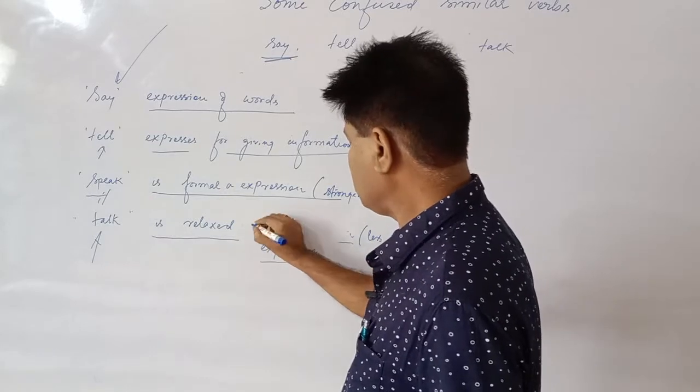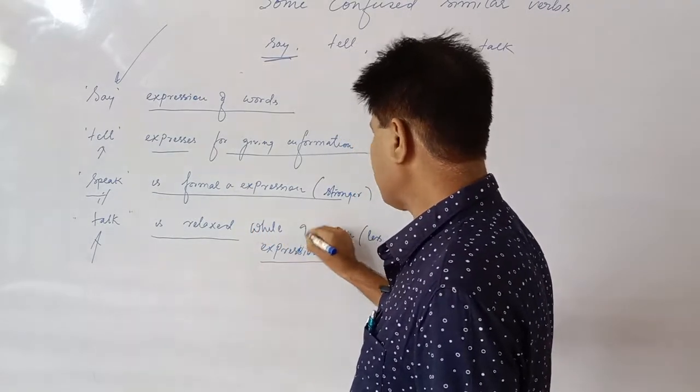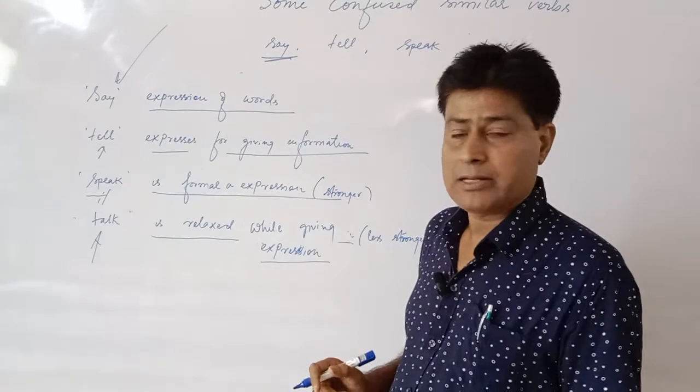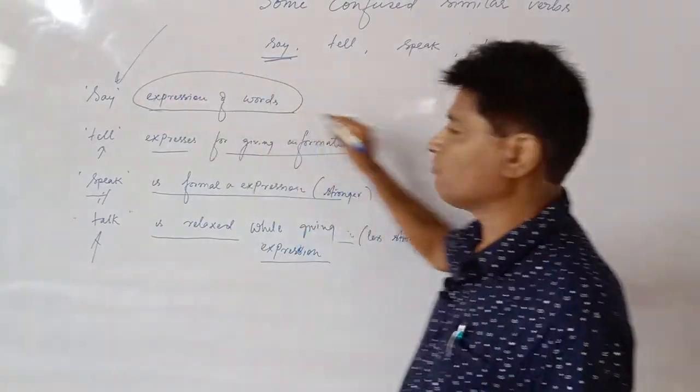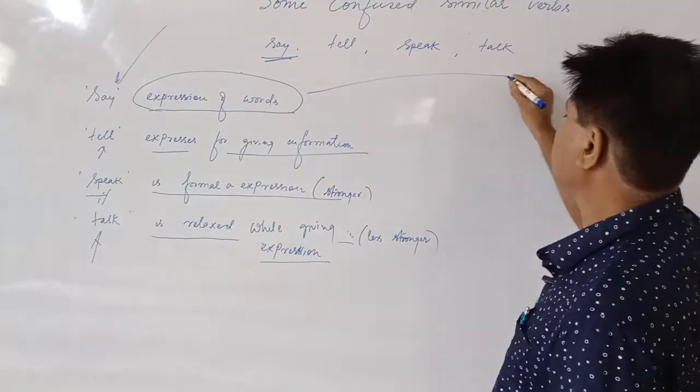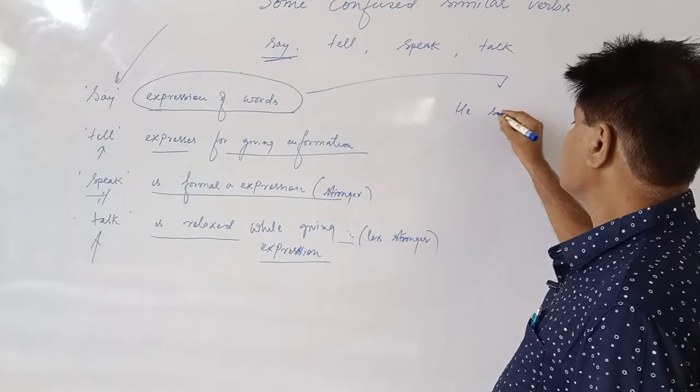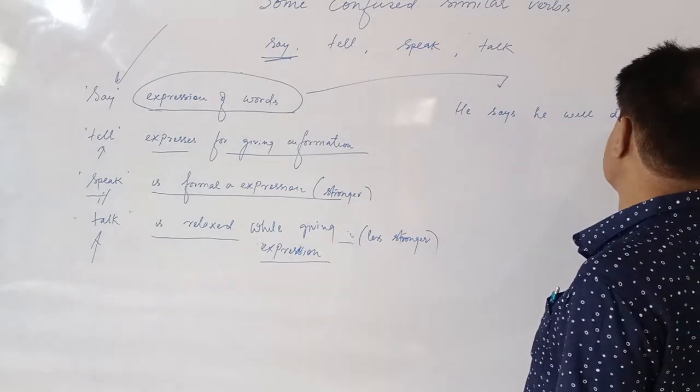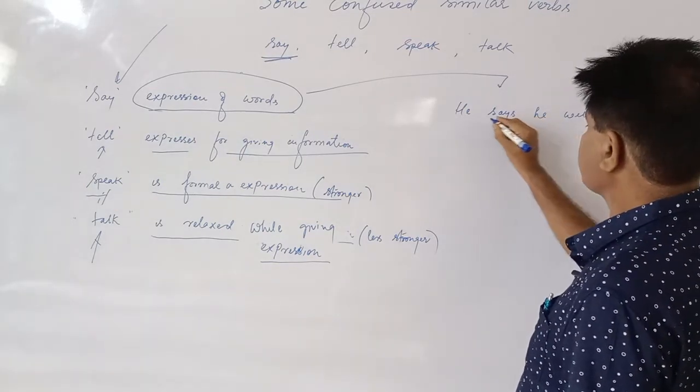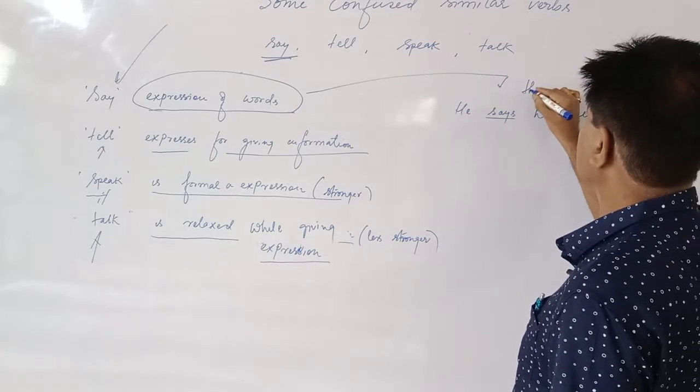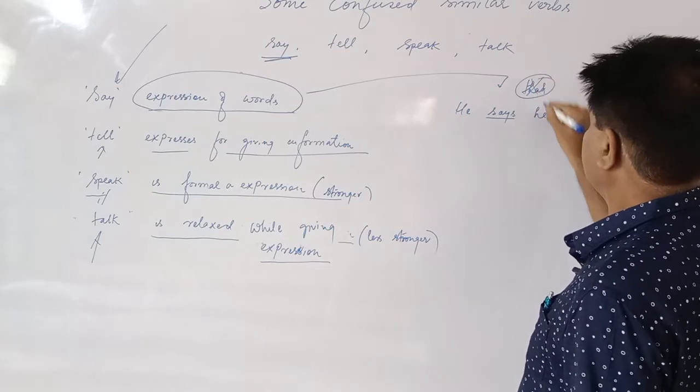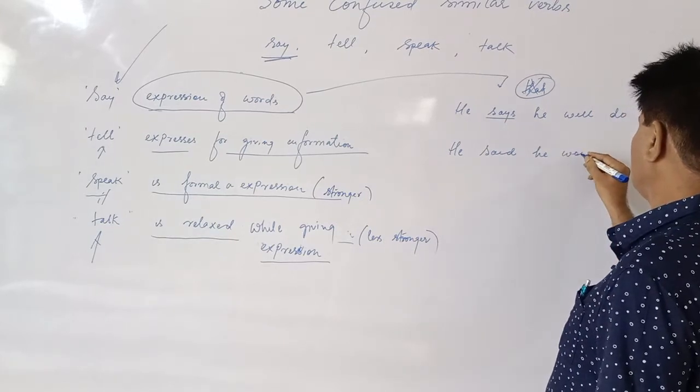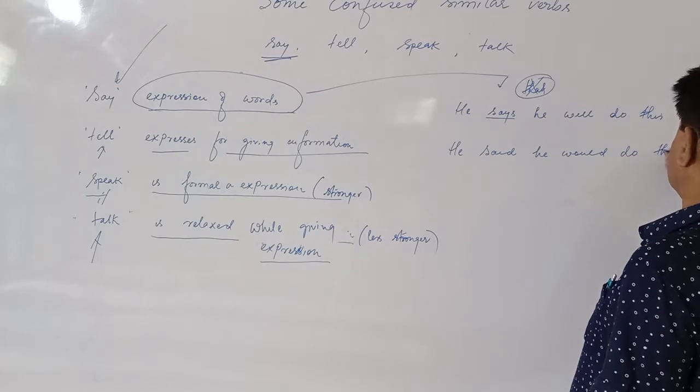Let me tell you how to use say. Say is all about expressing words. Examples: he says he will do this. In this sentence after says, you don't use any object. In the present form, he says; in the past form, he said he would do that.